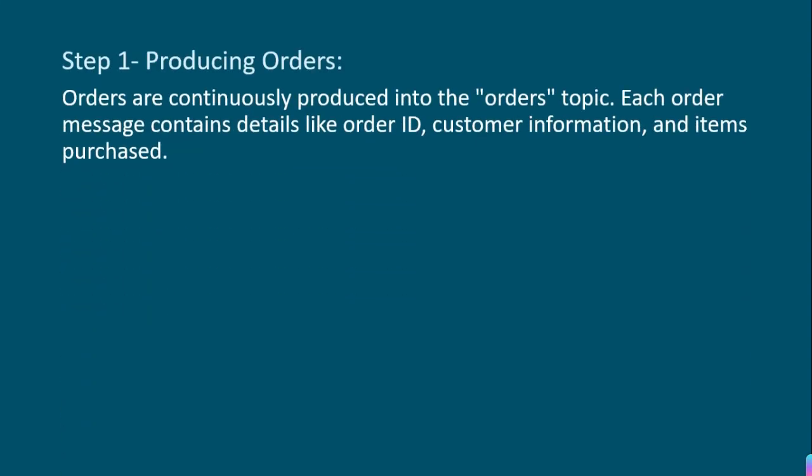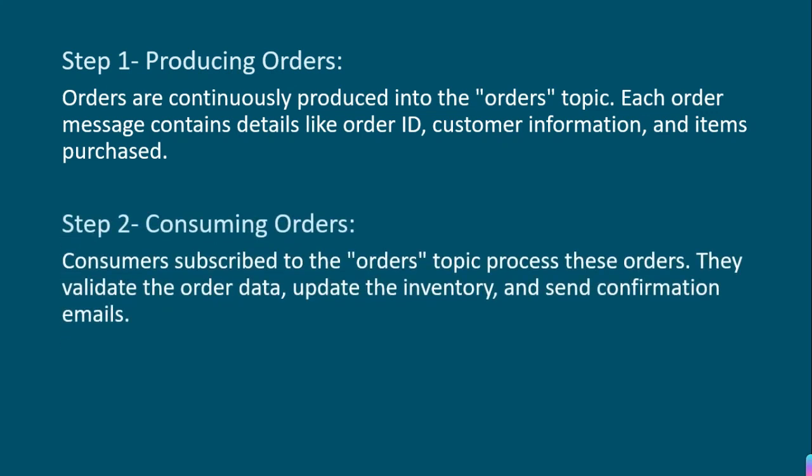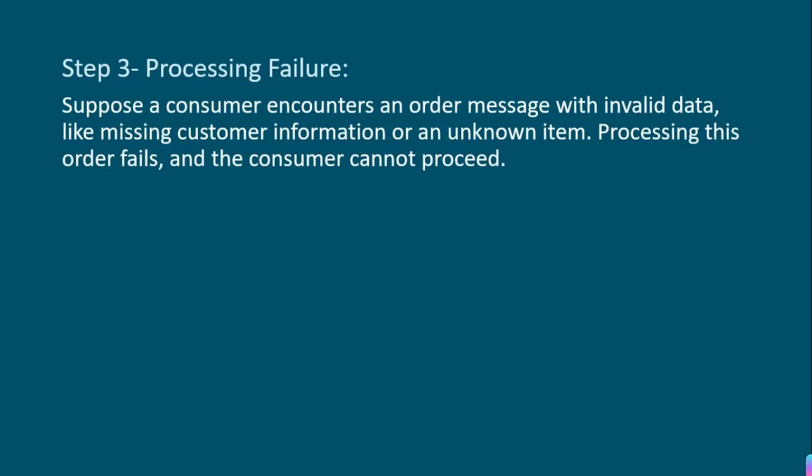So now we will see the seven steps of how we can use the dead letter queue. Step one is producing orders: orders are continuously being produced by the producer into the orders topic. Each order message contains details like order ID, customer information, and items purchased by the user. Step two is consuming orders: a consumer has subscribed to this orders topic, consuming those orders and updating the inventory, sending confirmation emails or notifications to the customers. Now suppose there is a processing failure — the consumer tries to read a message, but due to missing customer information or an unknown item, the processing fails.